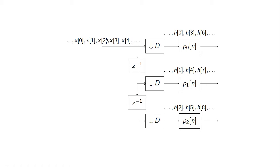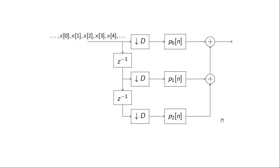We can filter each of these component signals with a downsampled version of the filter H of n. In the first case, we filter with H of 0, H of 1, H of 6, and so on, collected in the impulse response P of 0. In the second case, those samples were multiplied by H of 1, H of 4, H of 7, and so on, included in filter P1, and similarly with filter P2. Adding them all back together gives exactly the output we're looking for from the decimator system, applying it in three branches with filters P0 obtained from the original filter H of n.